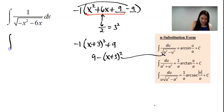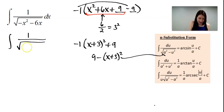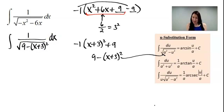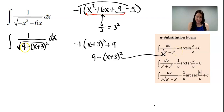So now I would have the integral of 1 divided by the square root of 9 minus (x plus 3) squared. Setting it up that way helps you identify your a and your u a little bit easier. We can see that a squared equals 9, therefore a equals 3.